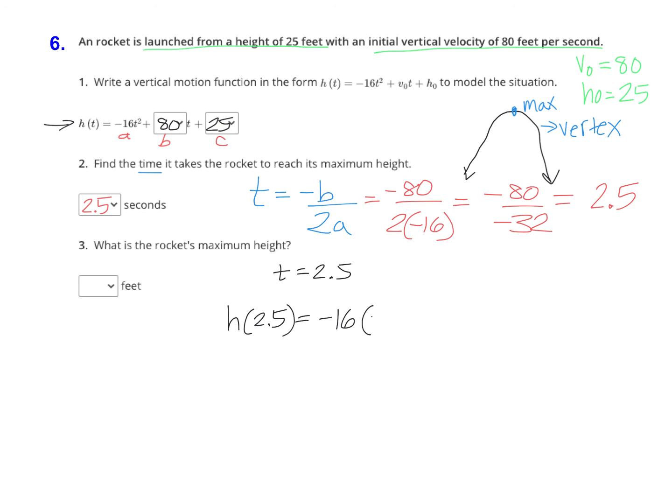Negative 16 times 2.5 squared plus 80 times 2.5 plus 25. Now you can type that whole thing into your calculator. Just make sure that you type that in very carefully, that you put parentheses around any place where you're subbing in 2.5, that you square that first set since it's t squared, and that it looks exactly like that before you hit the enter button. Once you hit enter you are going to get 125.